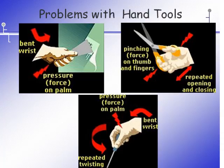Some typical problems with hand tools include awkward postures—postures outside of neutral can strain the neck, shoulders, elbows, wrists, hands, or back. Bending, stooping, twisting, and reaching are examples of awkward posture.